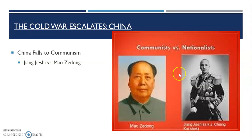Zhang was the leader of the Democratic Party in China at the time. Not surprisingly, the United States supported him — in fact, they sent billions of dollars to him. On the other hand, Mao Zedong represented the Communist Party in China and, not surprisingly, was sent tons of money from Russia.